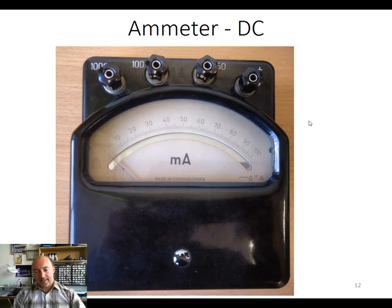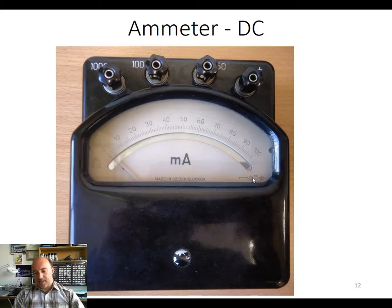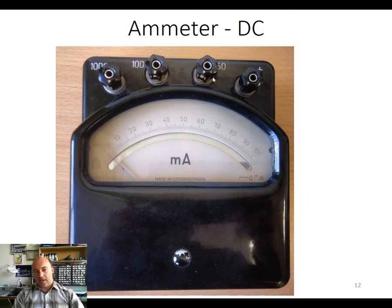The last analog instrument we will discuss is the ammeter — an instrument used to measure current. On the scale you can read the position, the accuracy class, and the system. This is a DC ammeter with 100 divisions on the scale. Here you can see the positive terminal and the different terminals for different ranges. This instrument does not have a knob to change the range; you need to manually reconnect to a different terminal if you want to measure a different current.